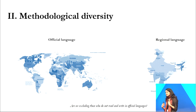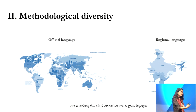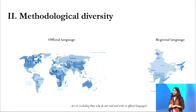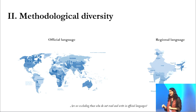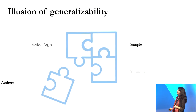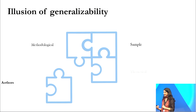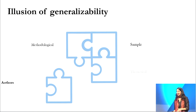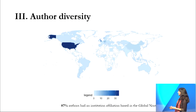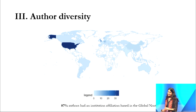While the authors made the journey to translate their survey into 40 languages, which is absolutely amazing, to truly pick up on regional diversity it is also important to understand who we are excluding by not using languages outside of official countries. Finally, even though author diversity is more layered, we used a common proxy of institution affiliation. We find that 87% of the authors had an institution affiliation based in the global north.